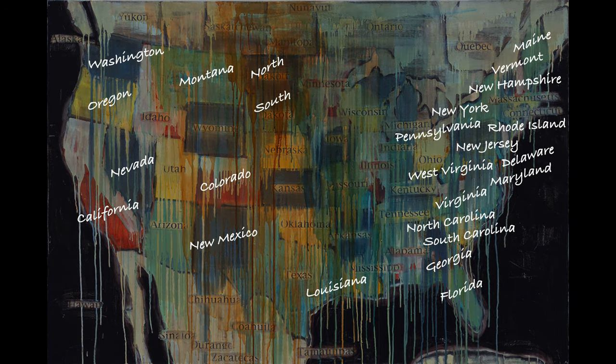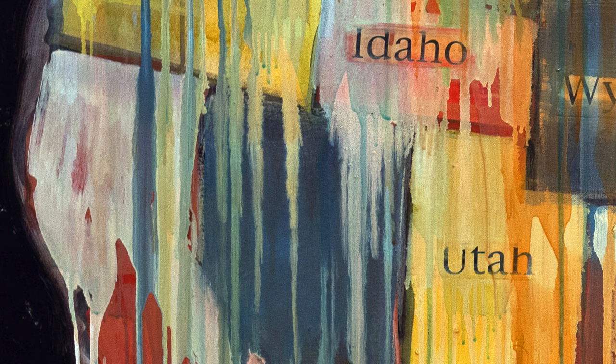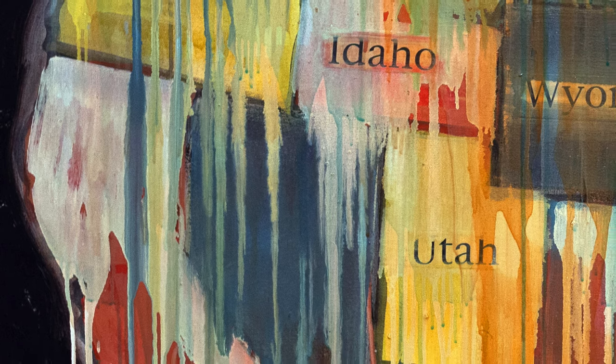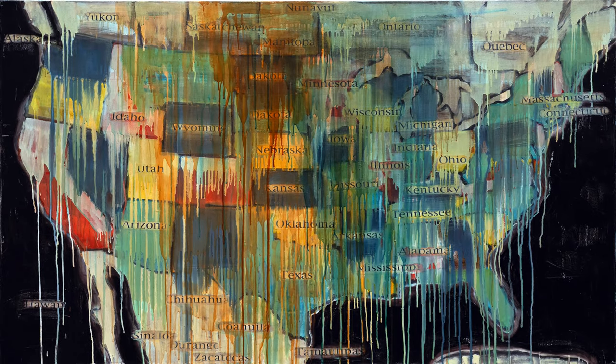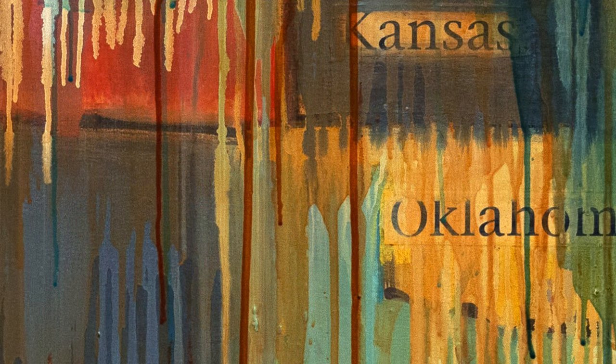The states that have been removed are names that have European origins. The outlines of the states are largely obscured, names are missing, boundaries are obscured, there's dripping paint. You get a sense that what we're looking at is a contested space. When you see the dripping paint, what does that evoke? Is it blood? Is it tears? Is something melting?